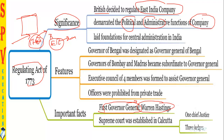The significance of the Regulating Act 1773 is that the British decided to regulate the East India Company. Before this, the Company had no proper government but was involved in all political and administrative activities of India — exploiting and influencing rulers with no proper legal rule. The British then demarcated the political and administrative functions of the Company, laying the foundation of central administration in India, since previously each province — Madras, Bombay, Calcutta — was ruled separately.